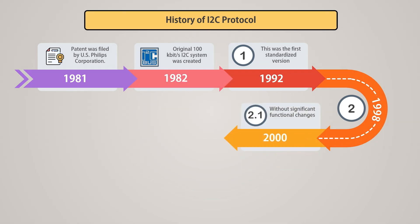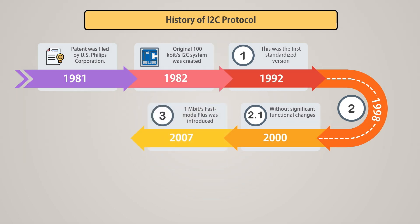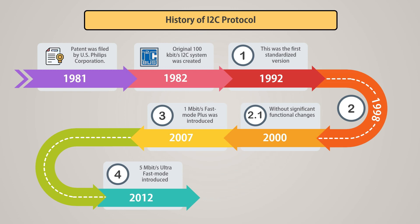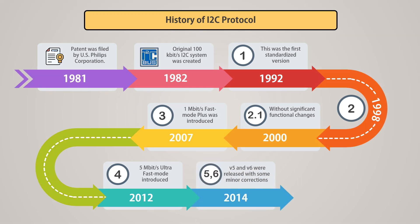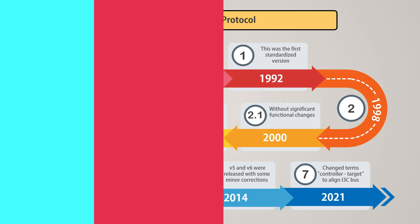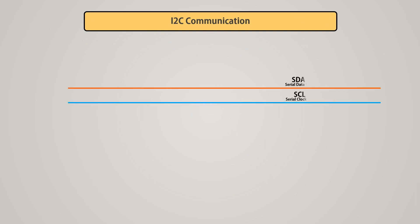In 2000, version 2 was clarified without significant functional changes. In 2007, 1 megabit per second fast mode plus was introduced in version 3. In 2012, 5 megabits per second ultra-fast mode for new USDA and USCL lines was introduced in version 4. In 2014, revised versions 5 and 6 were released with some minor corrections. In 2021, version 7 was released with updated terms — controller and target — instead of master-slave, to align with I3C bus specifications.